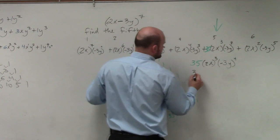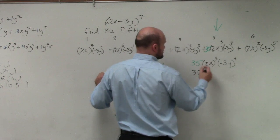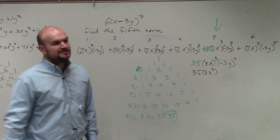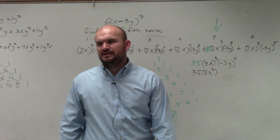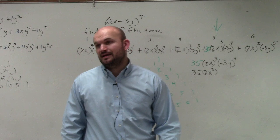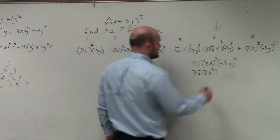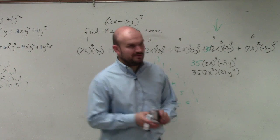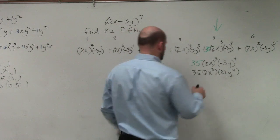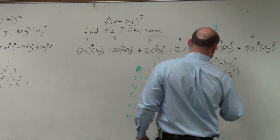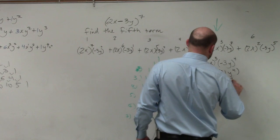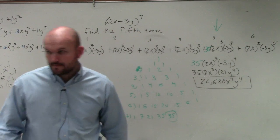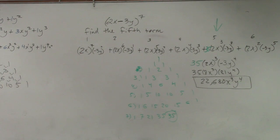So now we just do this. So we have 35. 2x cubed is going to be 8x cubed. And then negative 3 raised to the fourth is going to be positive, and that's going to be 81 y to the fourth. And then I need to multiply 35 times 8 times 81. 22,680. And then that's going to be x cubed y to the fourth. Well, that's cheating.